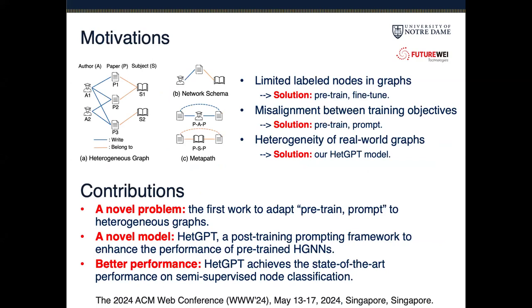The motivations for this work are threefold. First, there are always limited labeled nodes in real-world graphs. A common solution is to use the pre-train fine-tune framework. However, this traditional paradigm has the misalignment issue between training objectives of pretext tasks and those of the fine-tuning tasks, which results in the negative transfer issue.